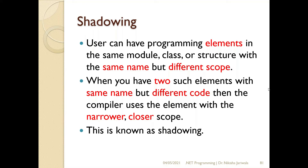That is the meaning of shadowing. When two different scopes have an element with the same name, whenever we execute it, the compiler will select the element from the closest scope. That concept is known as shadowing.